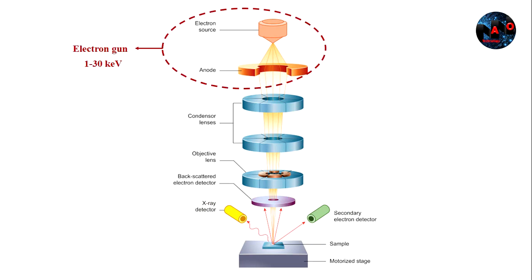The electron gun, which is composed of an electron source and accelerating anode, typically accelerates electrons through 1 to 30 kilo electron volt accelerating voltage.